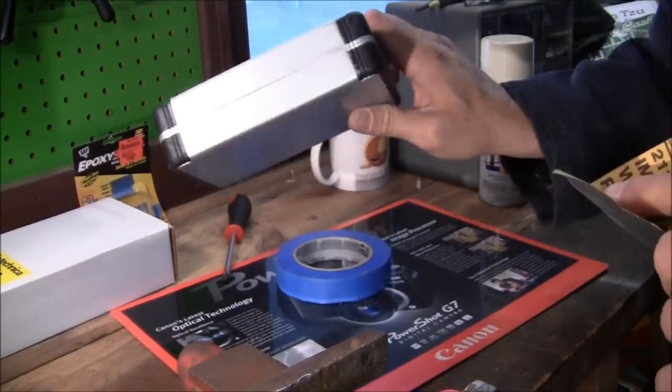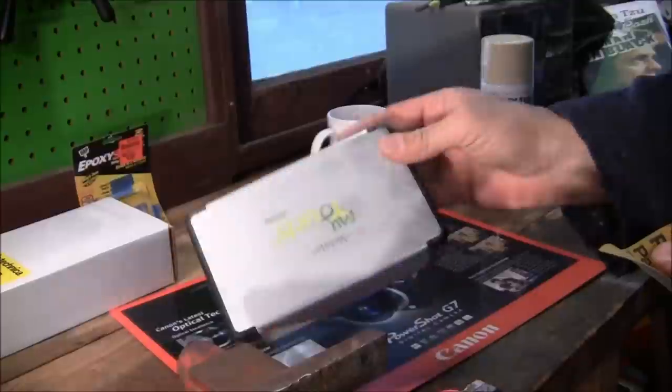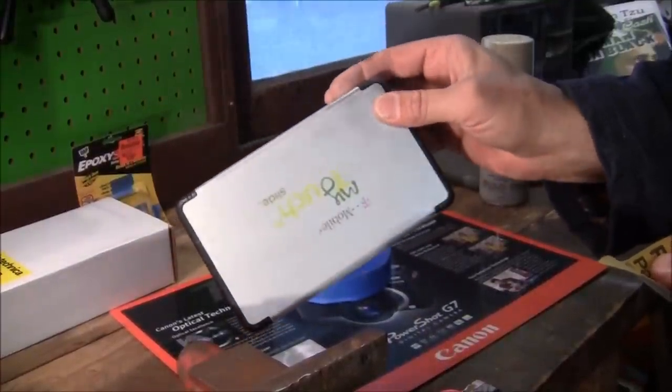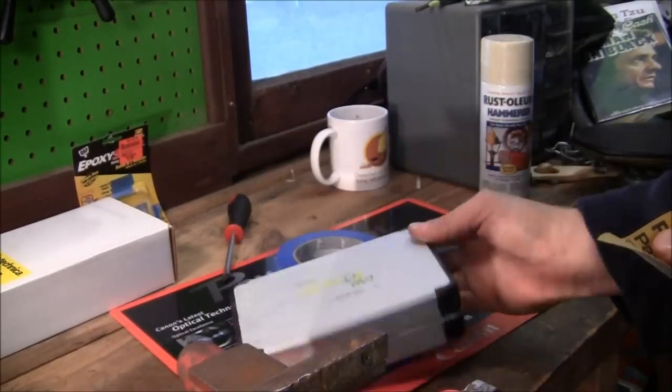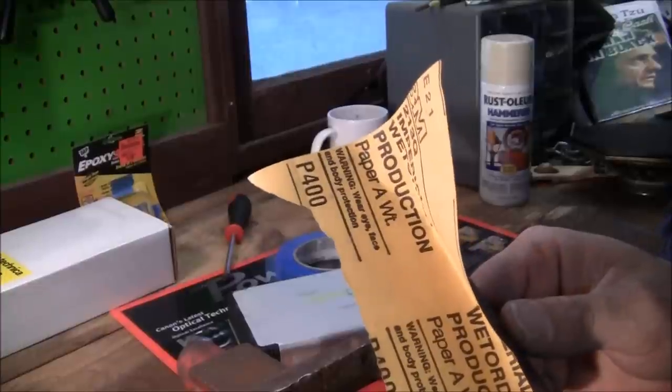If I do circles, it's going to make swirls and probably not going to help so much. So all I'm doing is just kind of roughing it to get a little bit of a grip. So when I paint, it's actually going to stick. Hit the shiny spots. The whole goal, no shiny spots.